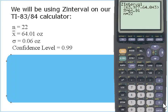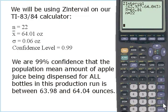Highlight Calculate and then press ENTER. Now let's interpret this output. We are 99% confident that the population mean amount of apple juice being dispensed for all bottles in this production run is between 63.98 and 64.04 ounces. Is a hypothesized value of 64.05 ounces in this interval? No — that's why it was rejected by the hypothesis test. Our confidence interval agrees with our hypothesis test. The confidence interval shows all the values that would not get rejected in the hypothesis test.